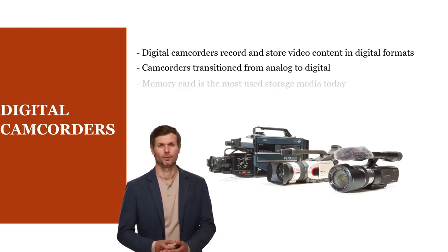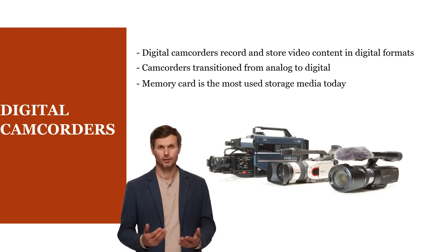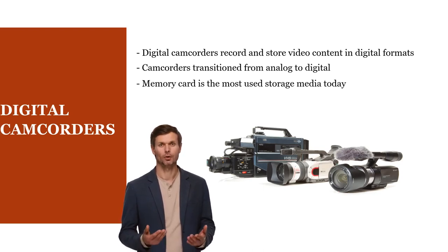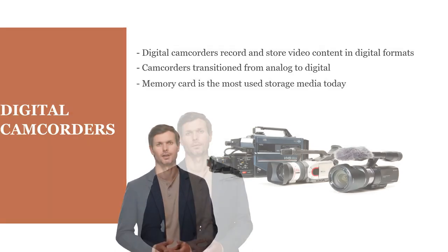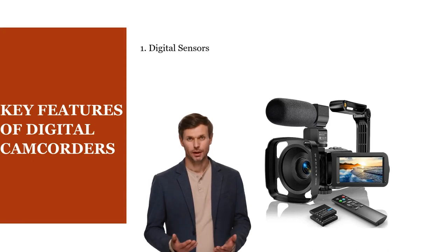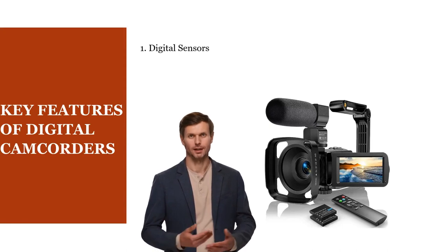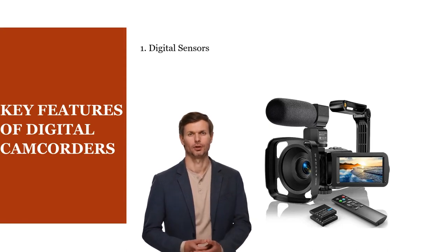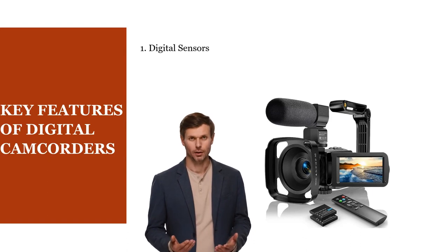Digital camcorders recorded video onto various digital formats like mini-DV, DVD, and today almost exclusively memory cards. Key features of digital camcorders include digital sensors. Digital camcorders use image sensors to convert light into digital data. These sensors determine the quality of the captured video, including factors like resolution, color accuracy, and low-light performance.